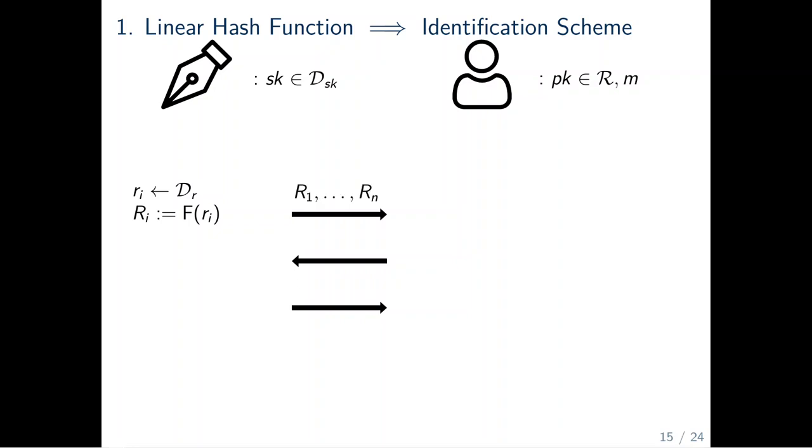Here, the index i denotes that the assignment is repeated for all values where i is defined. Next, the signer applies F to all values R in order to get a vector of values capital R. Then, the signer sends this vector to the user. The user now samples the challenge uniformly at random from its respective filter set and sends it over to the signer.